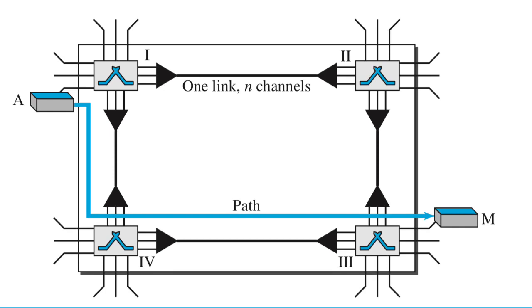Also there are two end devices A and M. Here A is a sender and M is a receiver and there is a path from A to M via switch 1, 4 and 3.